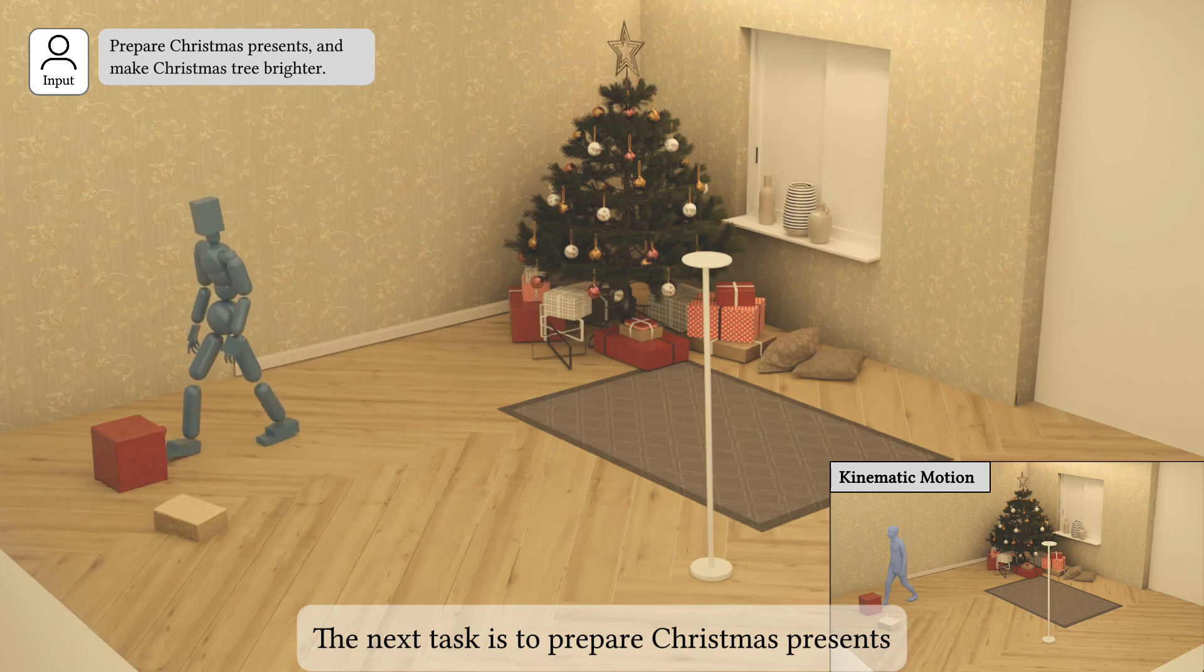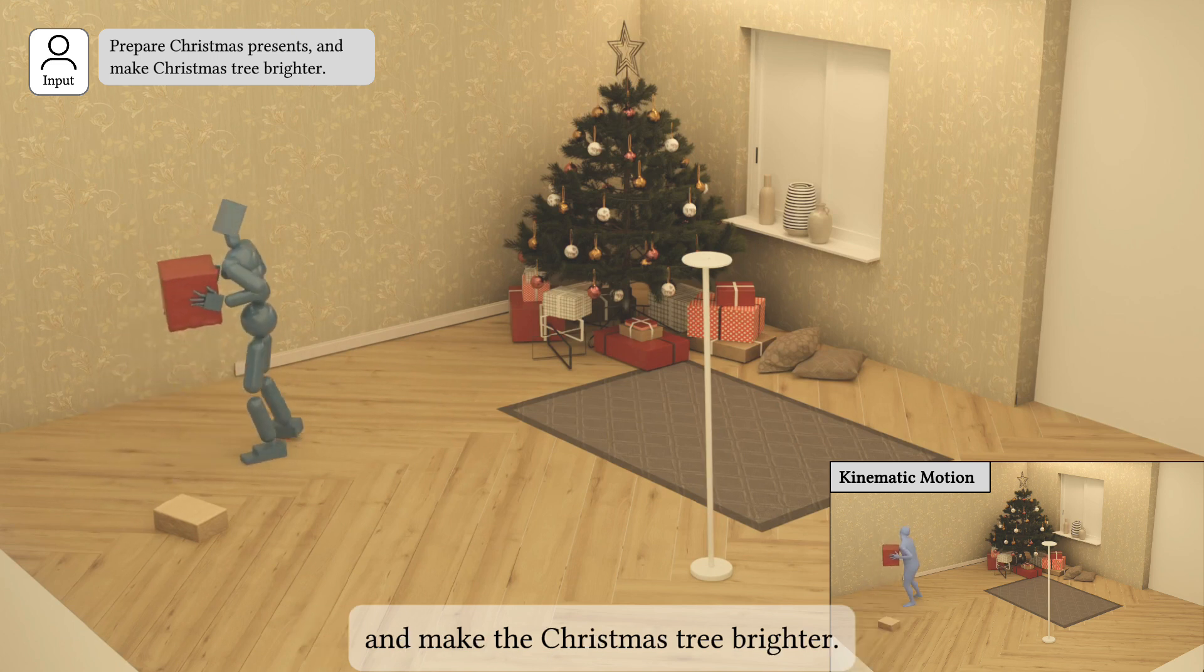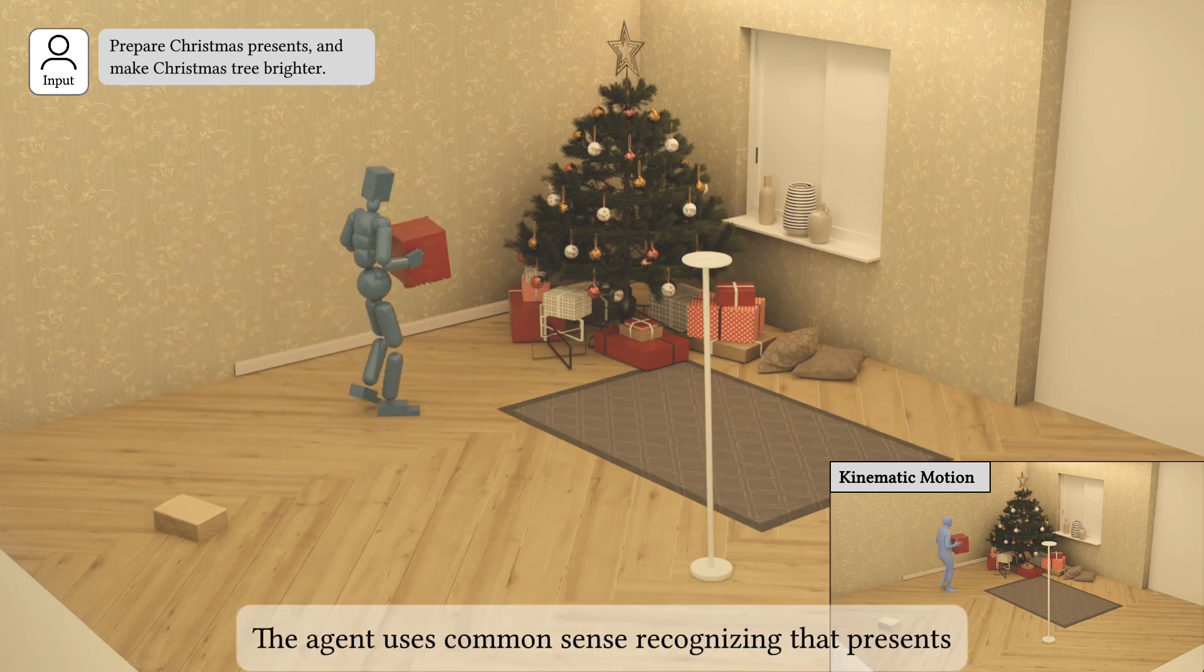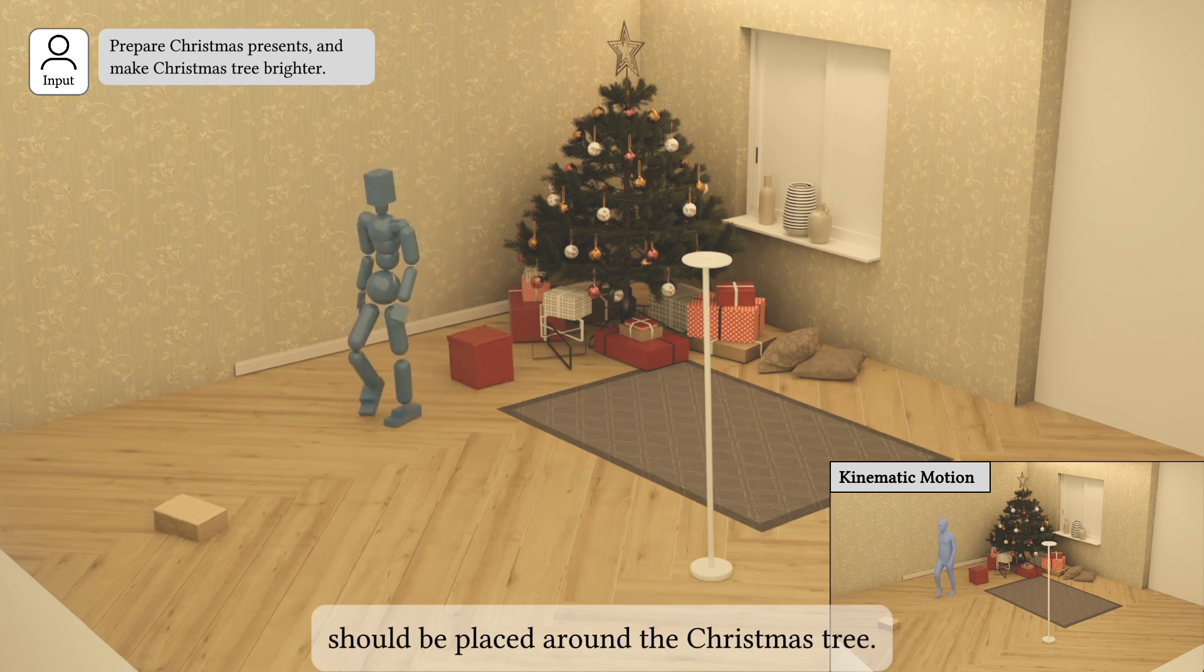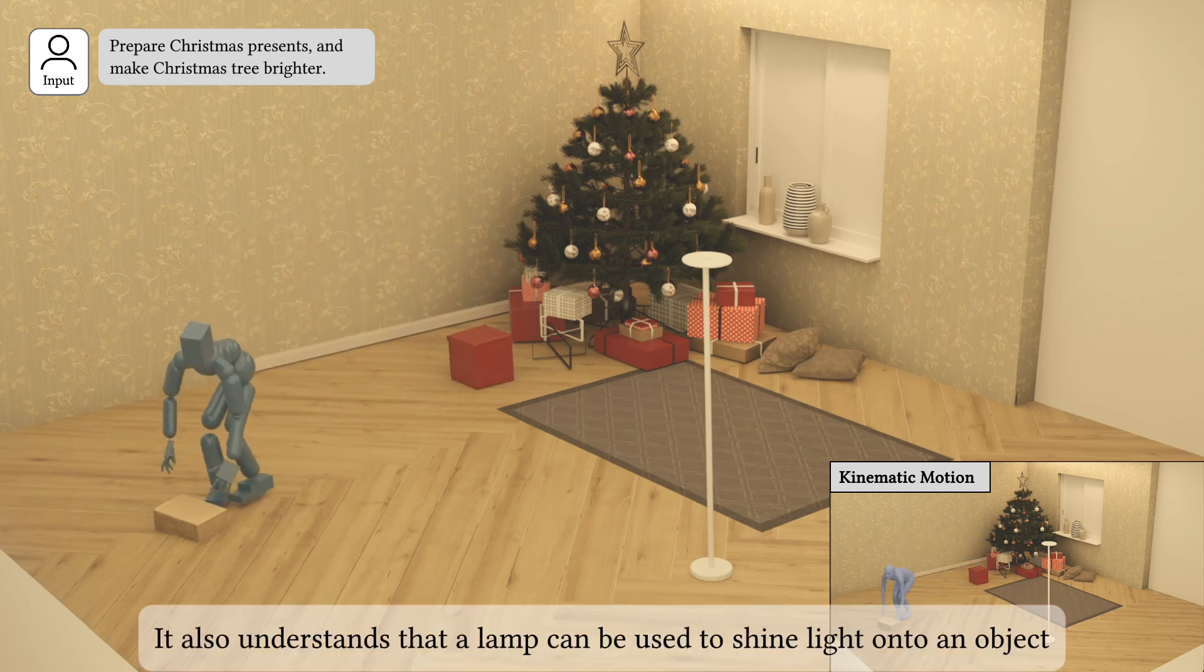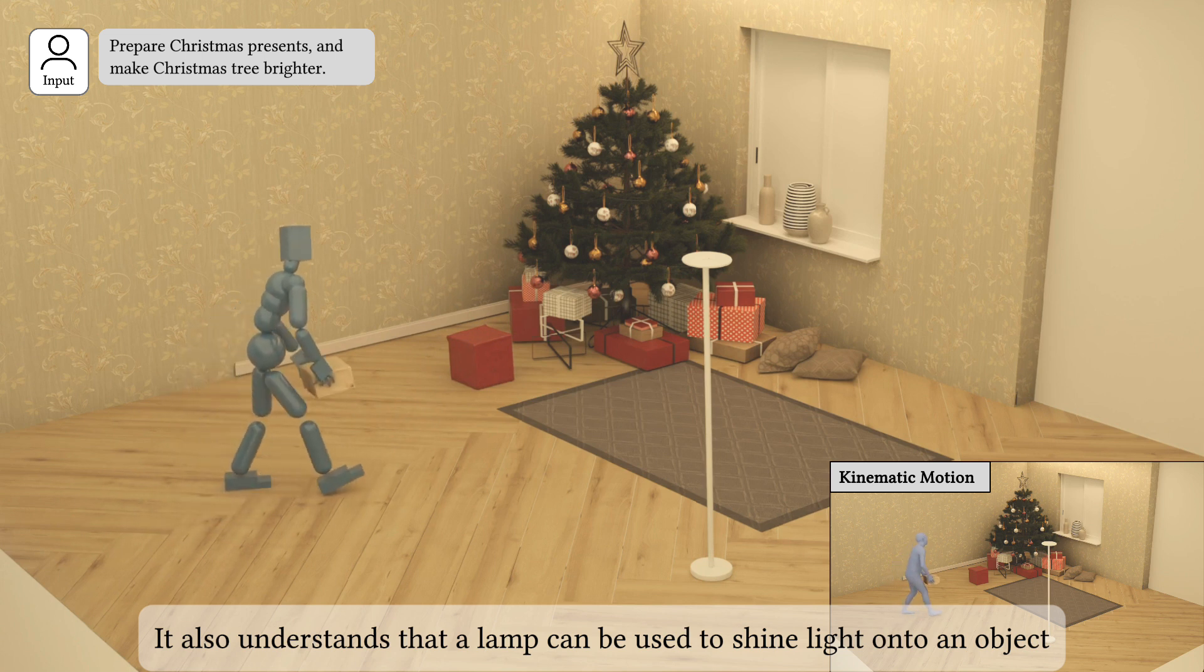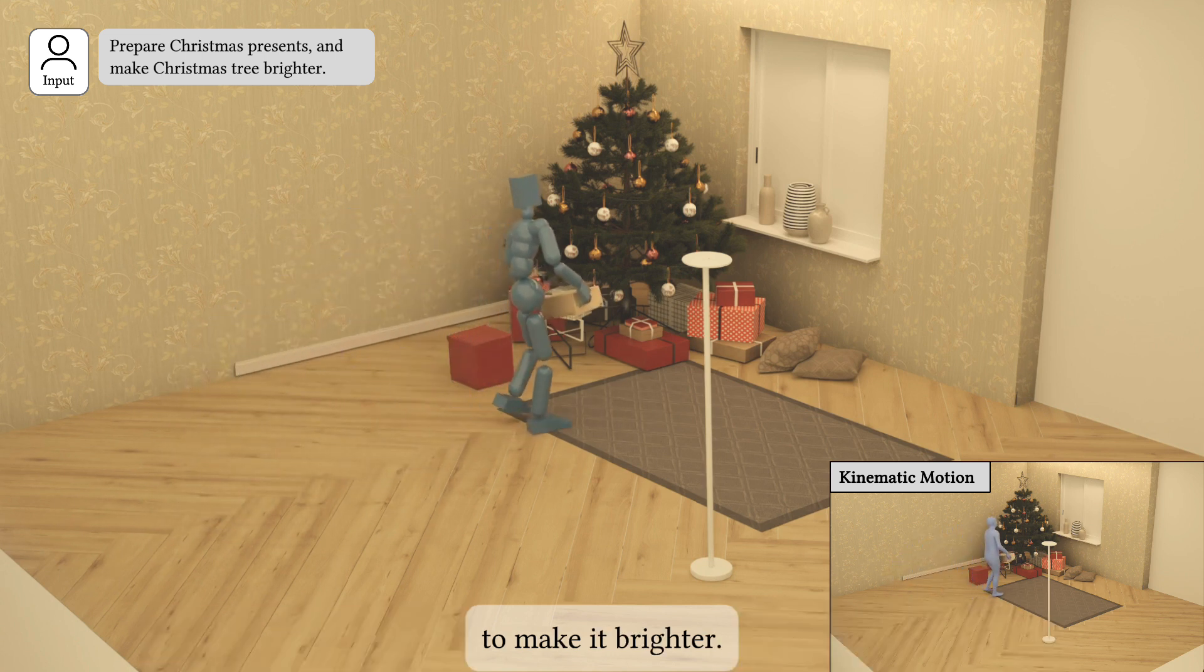The next task is to prepare Christmas presents and make the Christmas tree brighter. The agent uses common sense, recognizing that presents should be placed around the Christmas tree. It also understands that a lamp can be used to shine light onto an object to make it brighter.